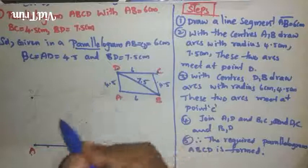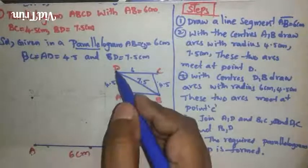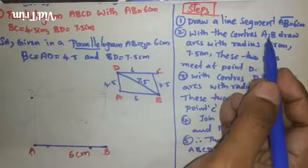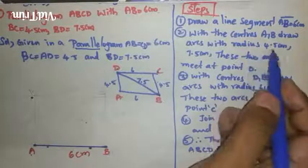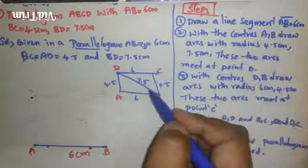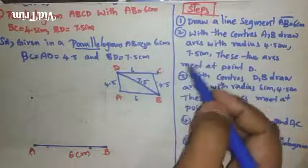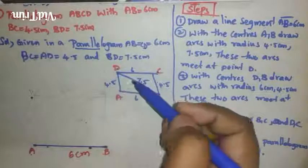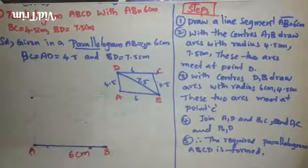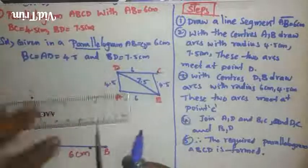With centers A and B, draw arcs. From A to D, how many centimeters arc should we draw? 4.5. From B to D, how many centimeters? 7.5 centimeters. From A to D, 4.5 centimeters. Let us take 4.5 centimeters.